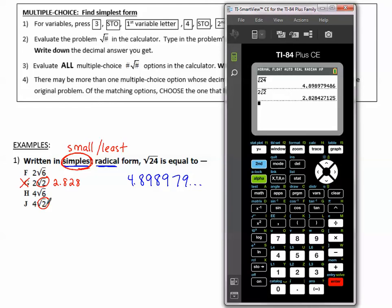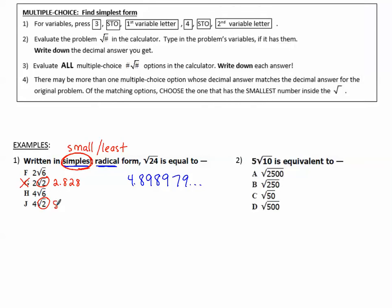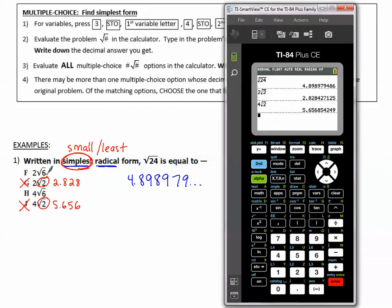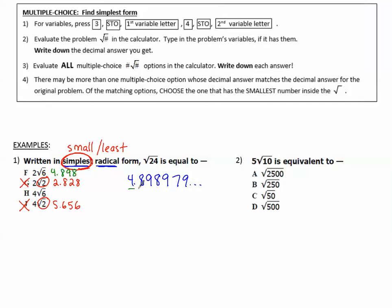Let's try 4 square roots of 2: 4, second x squared, 2. That's 5.656, so j is not the correct answer. So now I'm going to try the other ones. 2 square root of 6. You'll notice I started with one that has a smaller number because simple means small. And there we go, 4.89897, etc. This one does match. So F is the correct choice.